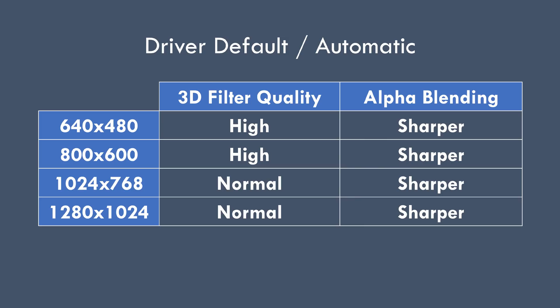Finally, I wanted to find out what happens if you set the driver to defaults, which uses automatic settings for those two filters. What I found is it depends on the resolution. The alpha blending setting was set to sharpest at all resolutions. However, the 3D filter quality was set to high at resolutions up to 800x600, so at 640x480 or 800x600 you get the higher-quality filter. But at 1024x768 and 1280x1024, the driver switches the 3D filter quality to normal and you get those horizontal artifacts.